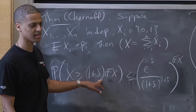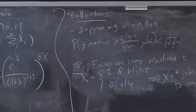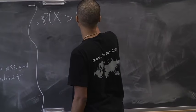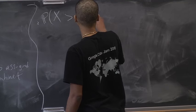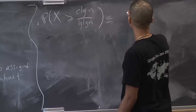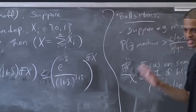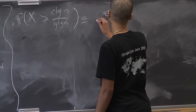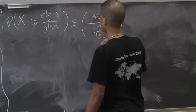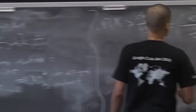Applying this with delta being log N over log log N, we get 1 plus log N over log log N, which is basically c log N over log log N. Since delta is large, 1 plus delta is basically delta. So the probability that X is bigger than c log N over log log N is at most (e over c log N over log log N) to the c log N over log log N.